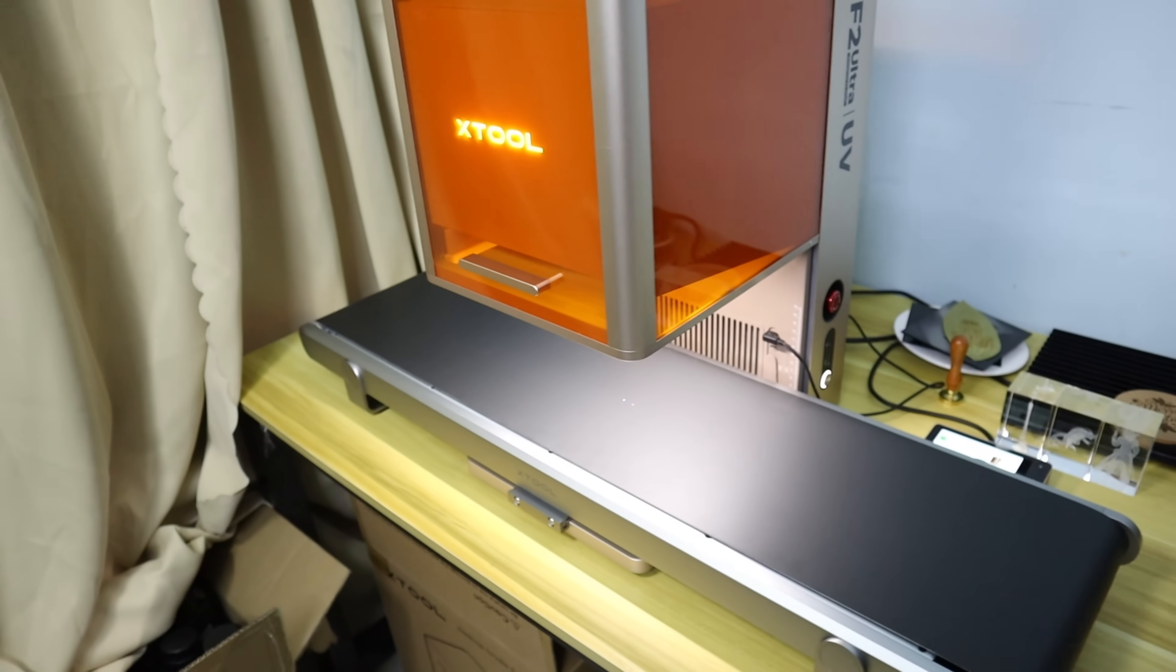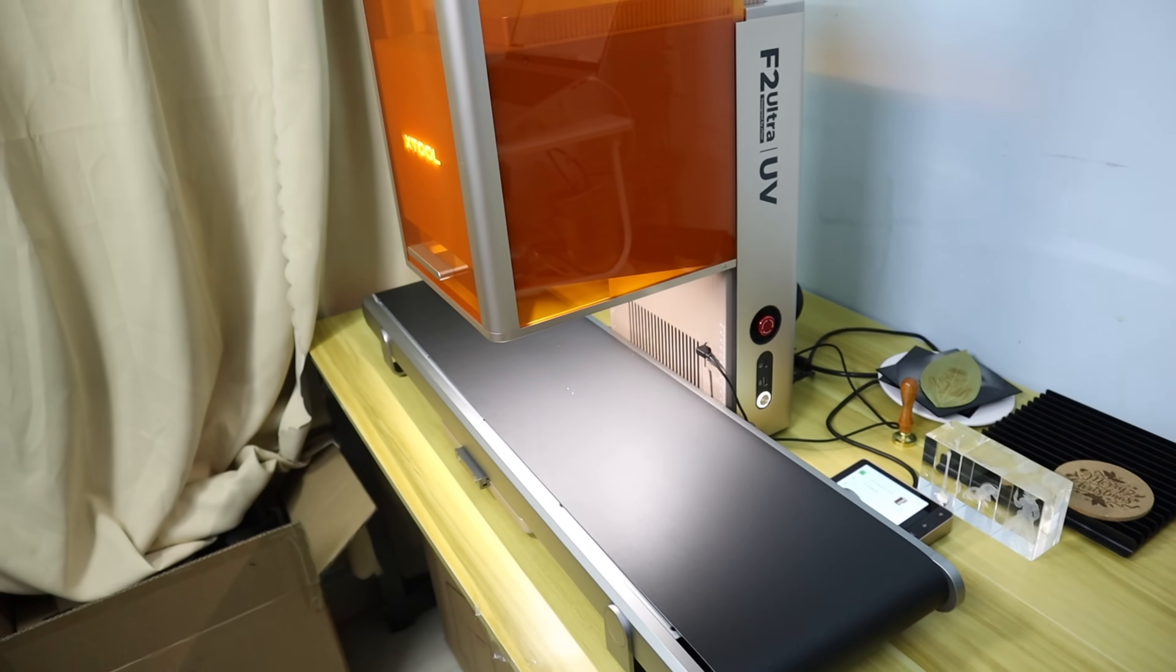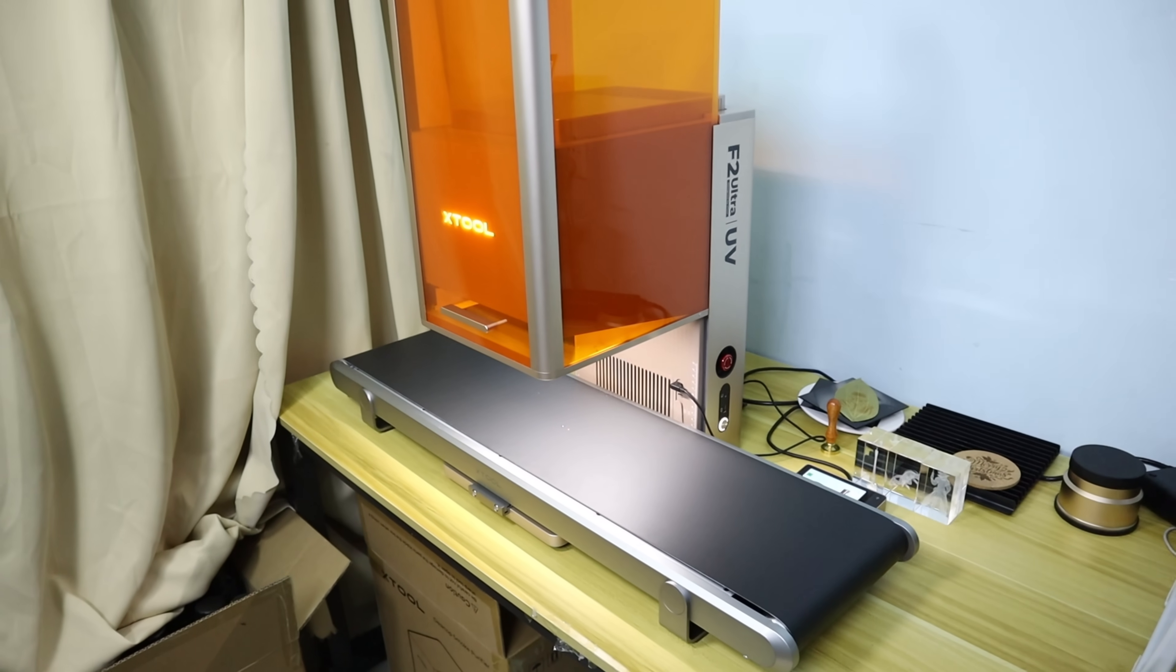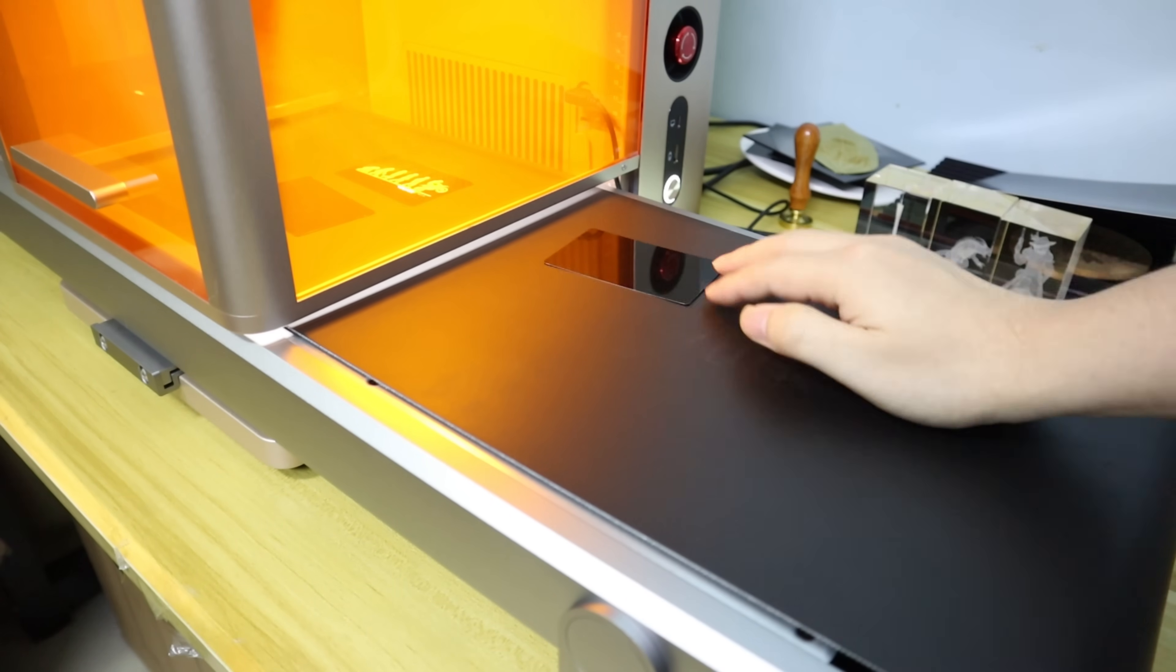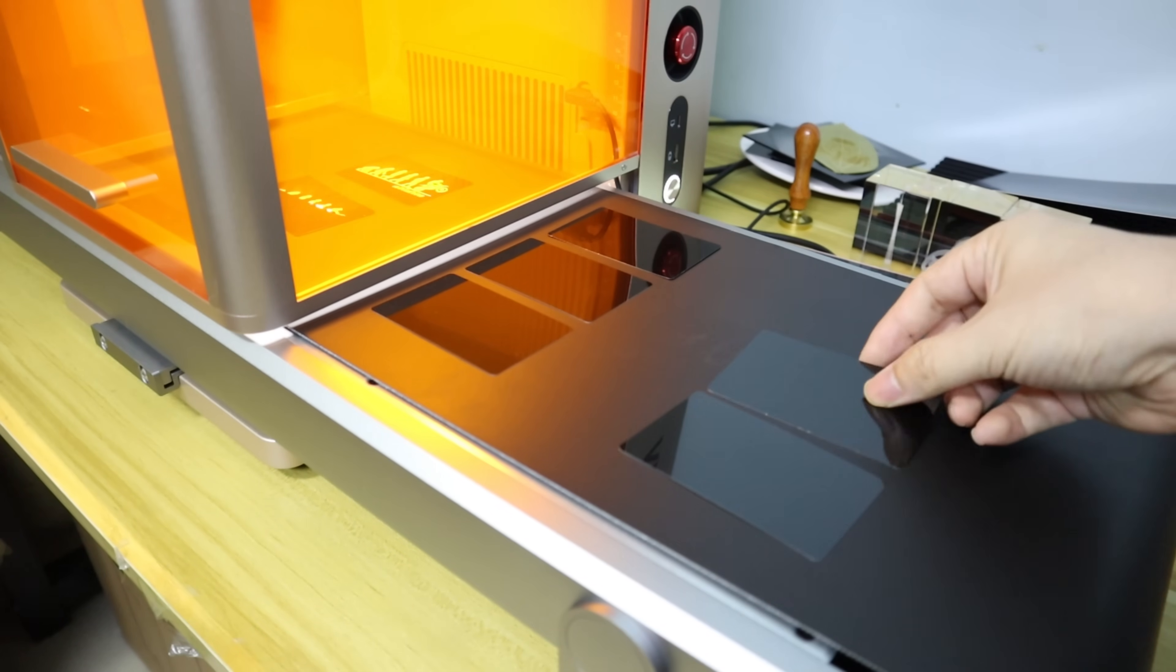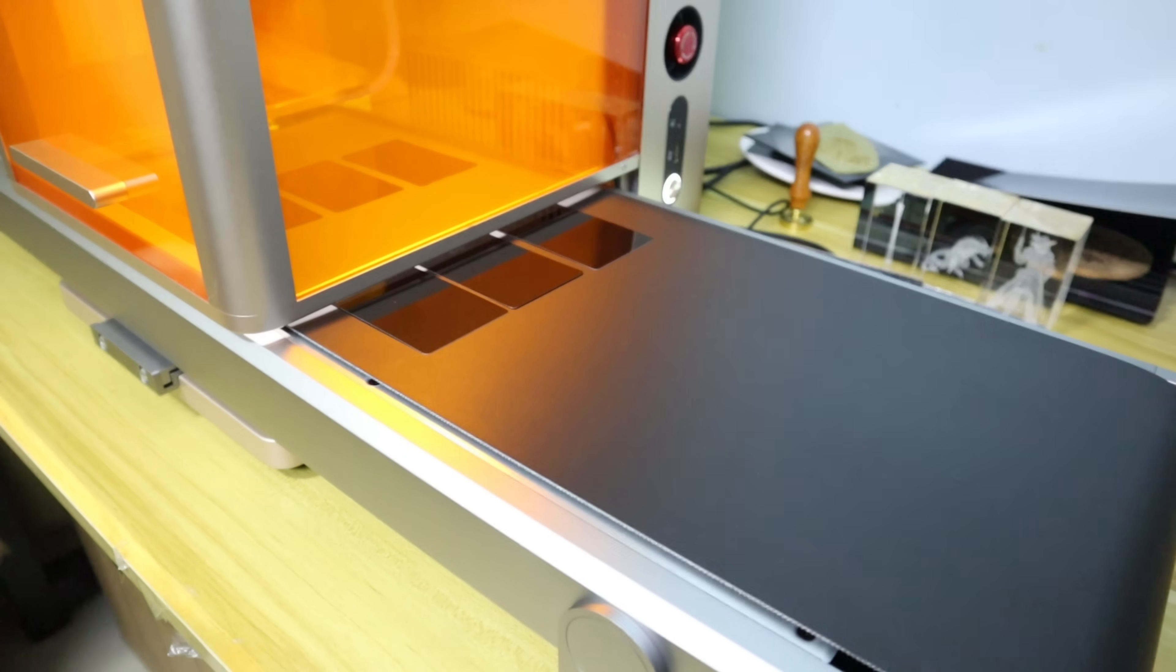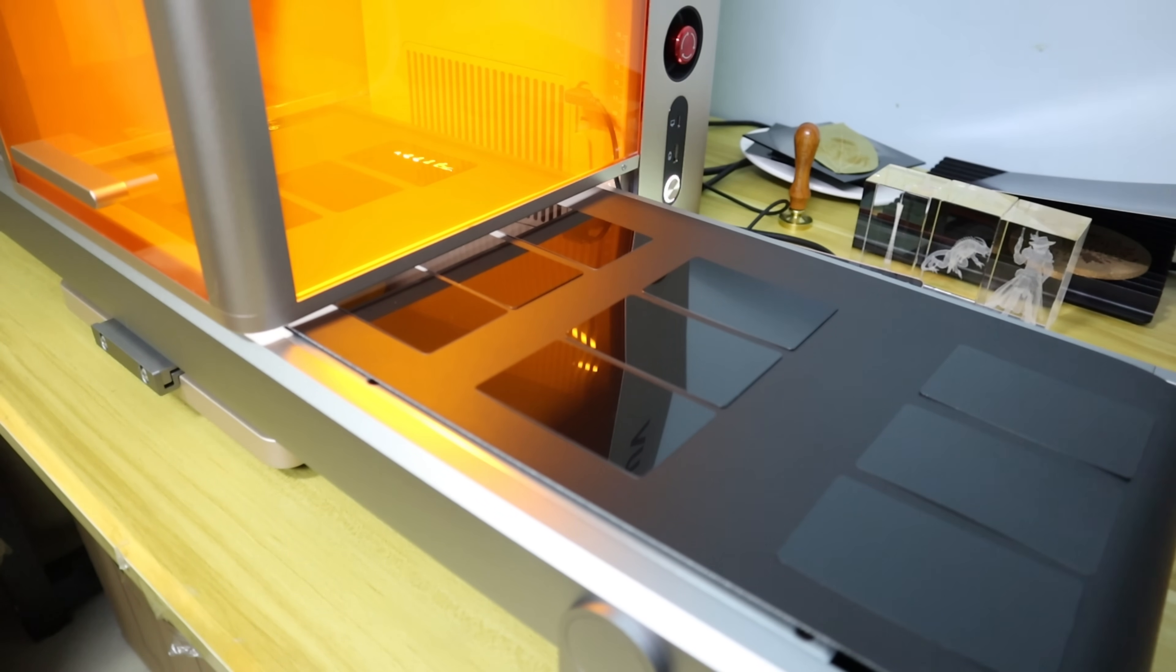The ACE2-F2 Ultra UV laser engraver combines powerful performance with user-friendly design, making it ideal for commercial production in workshops. To meet diverse engraving needs for your small business, I highly recommend purchasing the streamline conveyor. When paired with the conveyor, the maximum engraving area can expand to 200 mm by 500 mm. The most important thing is that you can use the conveyor to do batch engraving for your small business production.